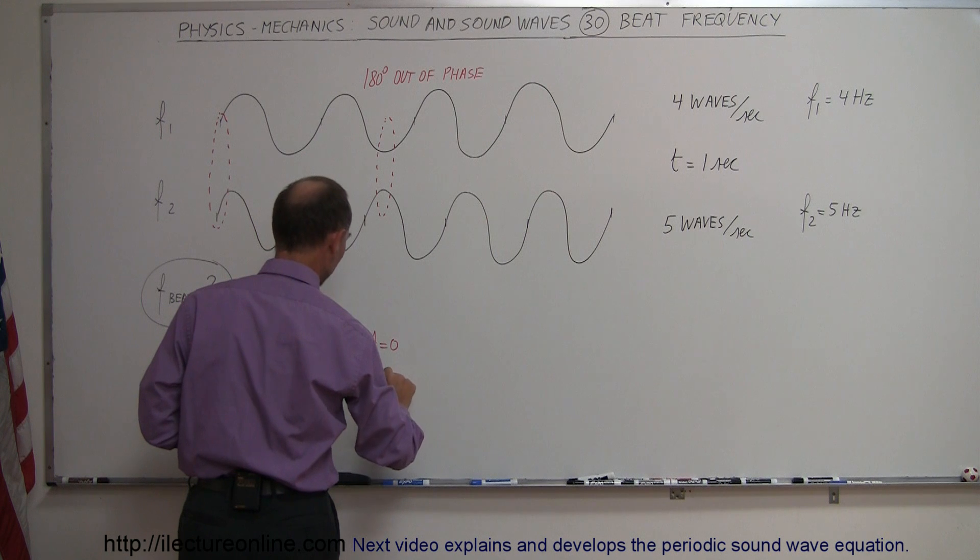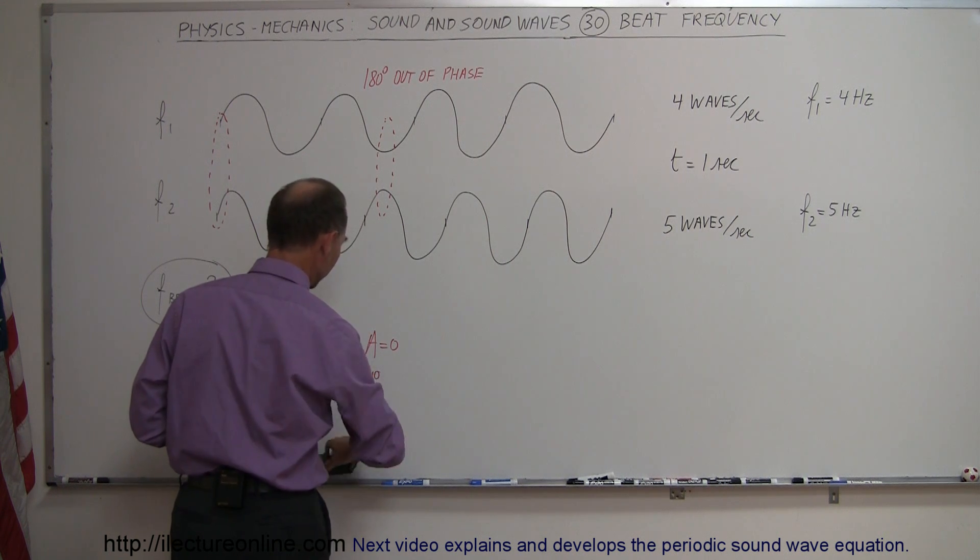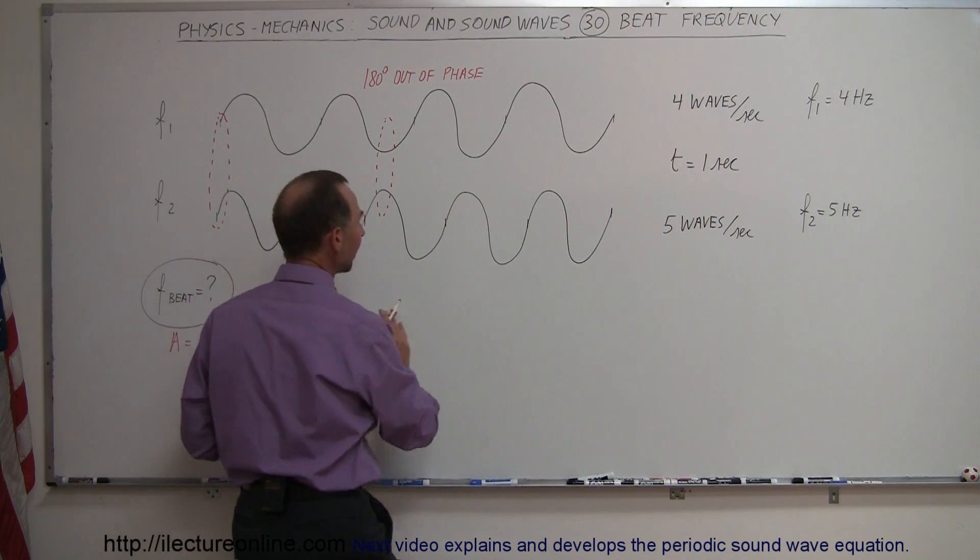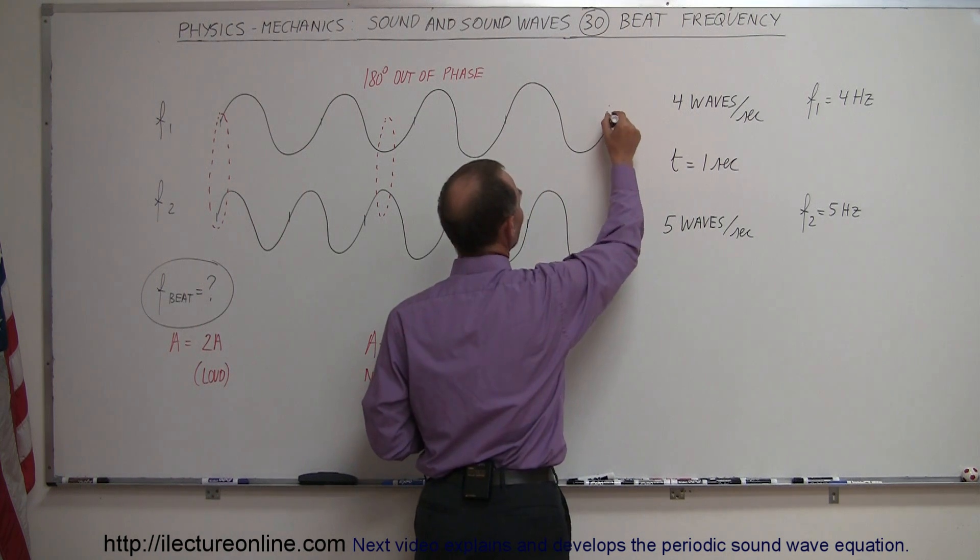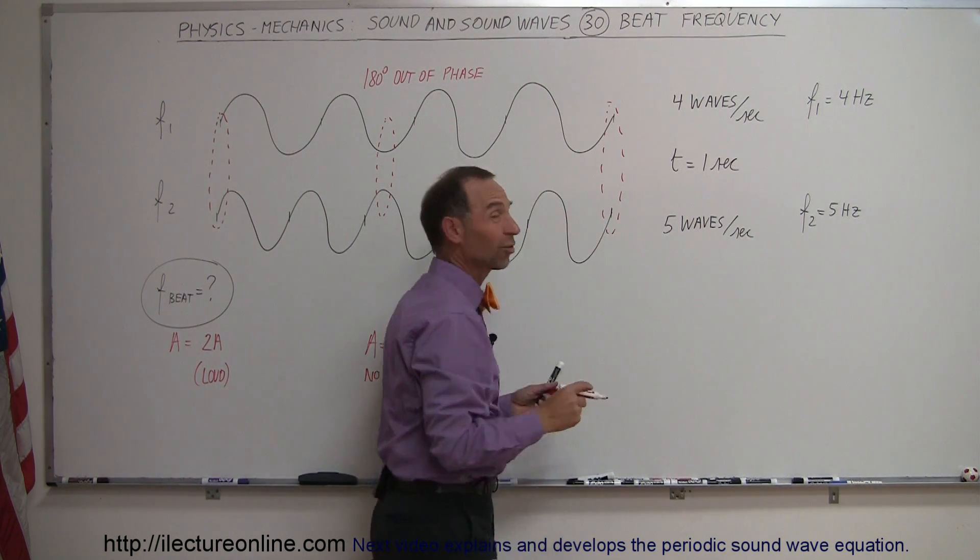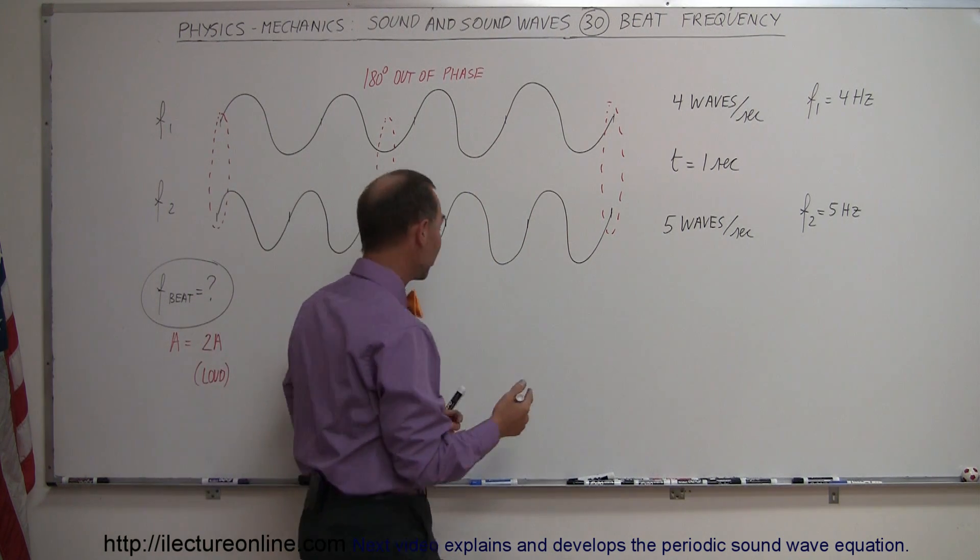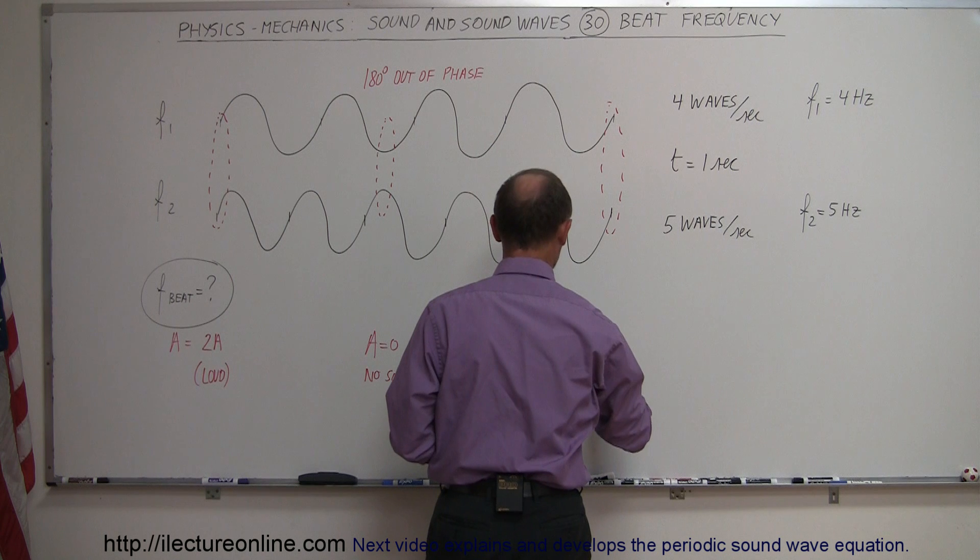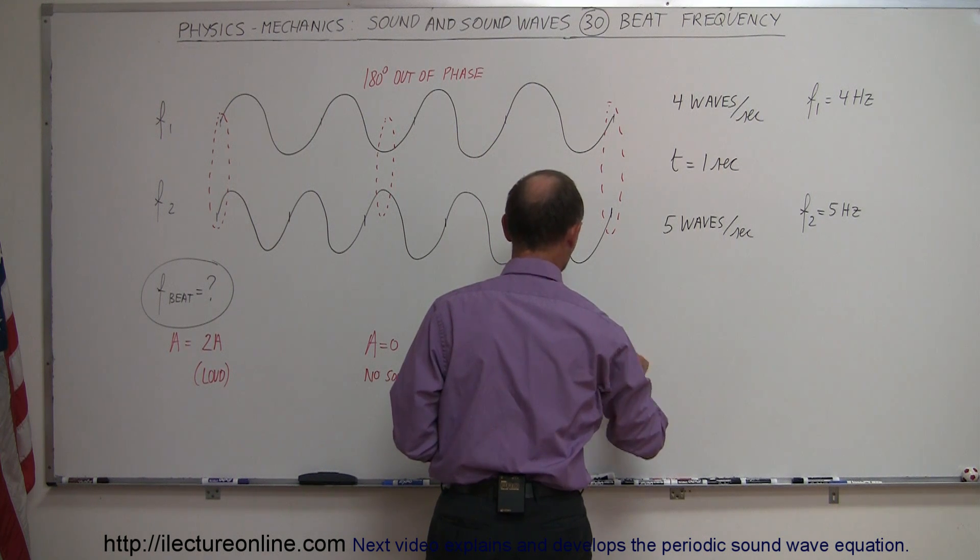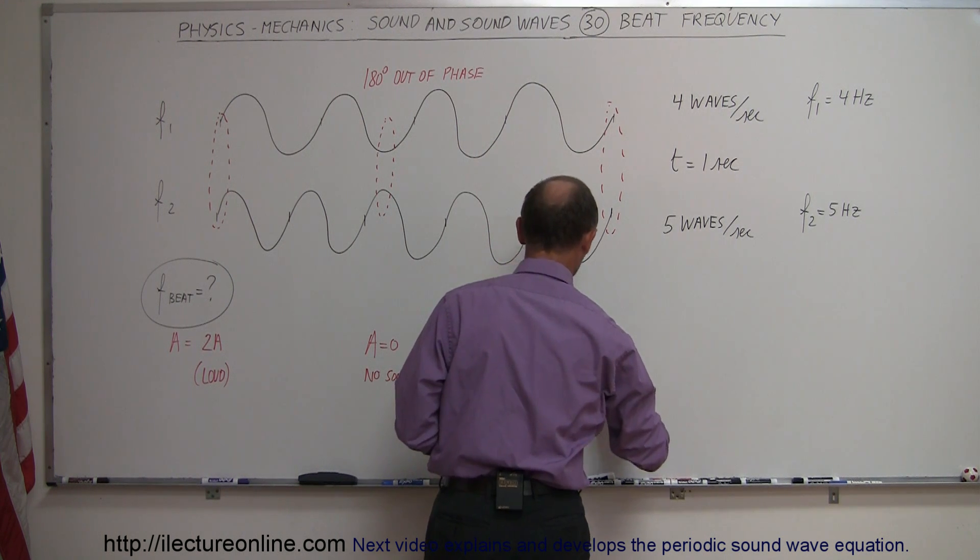And then at a later point right here they're back in phase, and again if they're back in phase there's constructive interference. That means you hear an amplitude or intensity twice the normal intensity. So the amplitude here is twice the original amplitude and again you hear a loud sound.